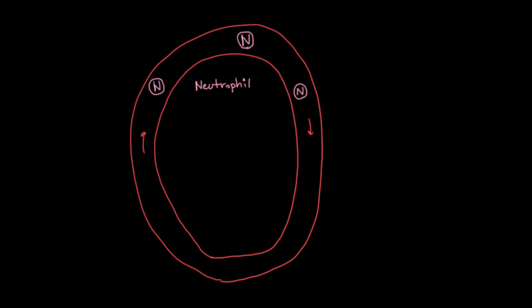Neutrophils do their work only when there's infection, and that infection usually occurs out in the tissues. So let's say we've got a little bacterial infection out here. The neutrophils are needed out there, so the question is how are they going to get there? It turns out you have cells out here called macrophages.